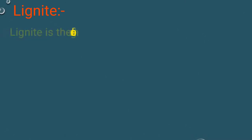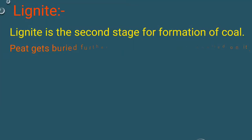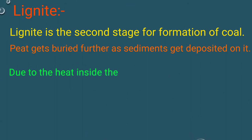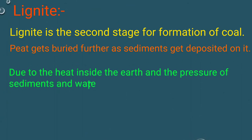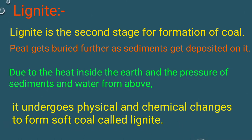Lignite is the second stage in the formation of coal. Peat gets buried further as sediments are deposited on it. Due to the heat inside the earth and the pressure of sediments and water from above, it undergoes physical and chemical changes to form a soft coal called lignite.